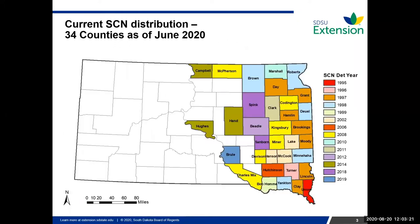SCN was first identified in South Dakota in 1995 down in Union County. Since then it has progressed to 34 different counties, all along the eastern part of the state where we grow a lot of soybeans. Counties that show white on the map don't necessarily mean they don't have SCN — it's just that we haven't come across that field or that sample yet, because you're not going to see symptoms when that SCN level is low.